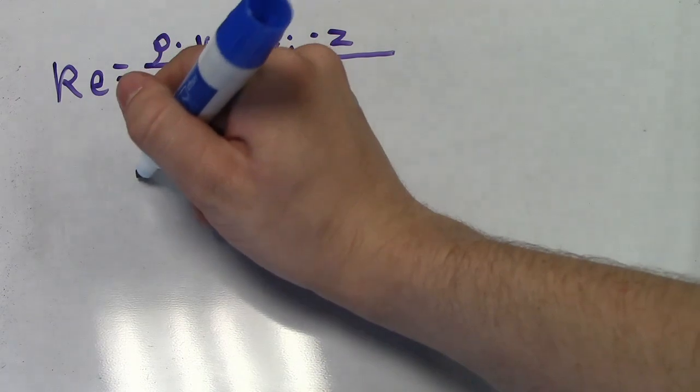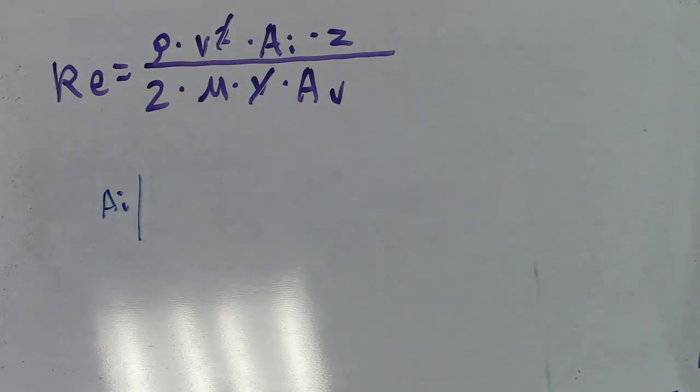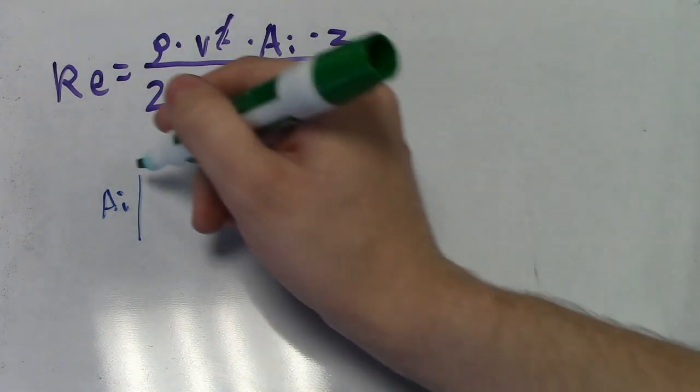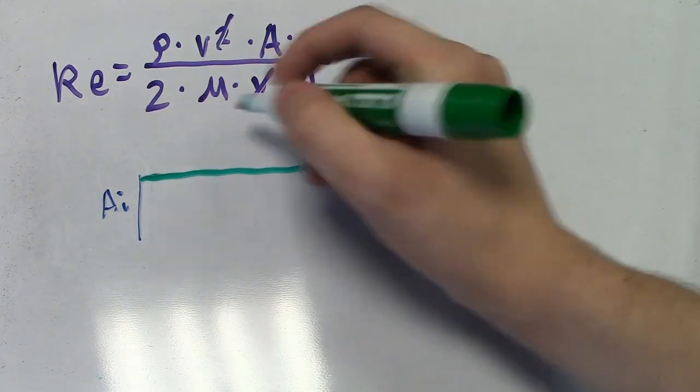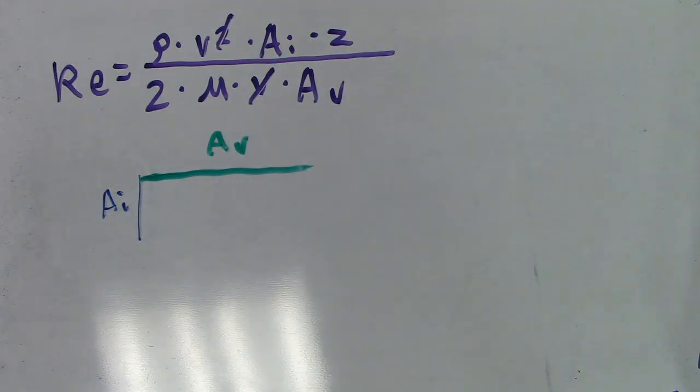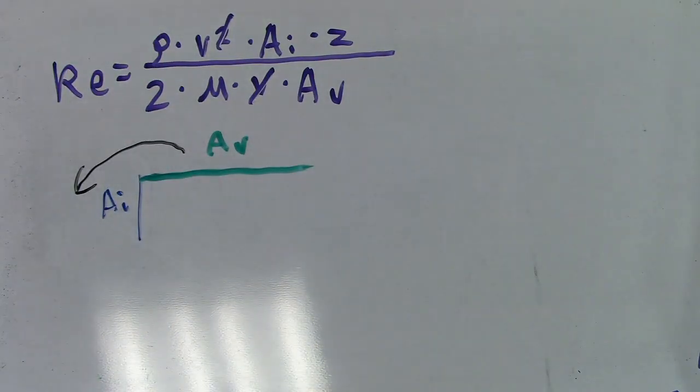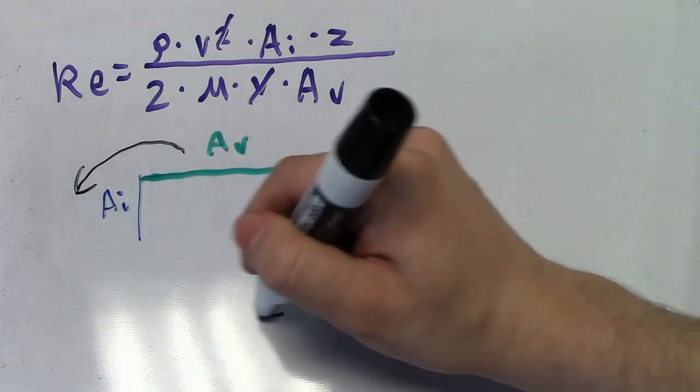If you remember from earlier, these two areas were not of the same thing. The inertial force area, a sub i, was the area of the front of the wing, while the viscous force area, a sub v, was the area of the top of the wing. Since Reynolds number is a ratio, and these are reference areas, we can rotate one of the forces, by convention the viscous force, so the areas are of the same thing. Which means they cancel directly.